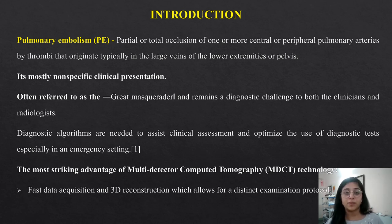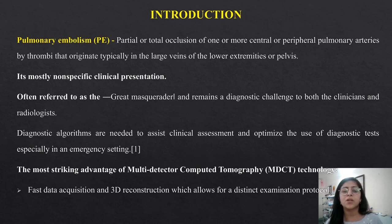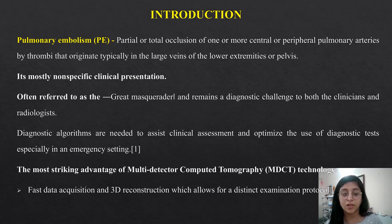What exactly is pulmonary embolism? It is partial or total occlusion of one or more central or peripheral pulmonary arteries by thrombi that originate typically in the large veins of the lower extremities. It is mostly non-specific in clinical presentation, often referred to as the great masquerader, and remains a diagnostic challenge. Diagnostic algorithms are needed to assist clinical assessment, especially in an emergency setting. The most striking advantage of multi-detector CT technology is its fast data acquisition and 3D reconstruction, which allows for a distinct examination protocol.